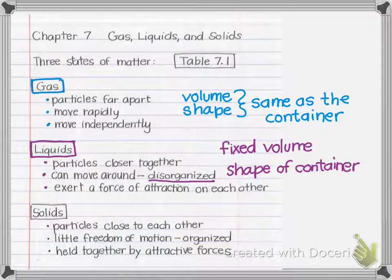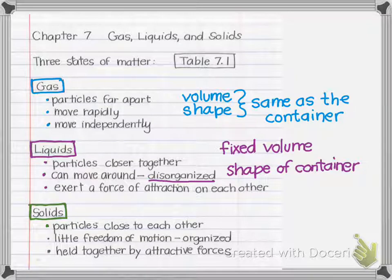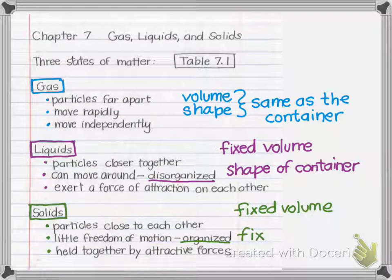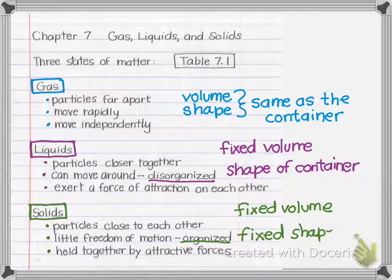Now think about a solid — if we're thinking about water, you're thinking about ice. When you have a solid, the particles are close to each other, and because they're so close the attractive forces are strong and there is little freedom of motion. The particles are very organized and held closely together. As a result, solids have both a fixed volume — the amount of space they take up will not change — and a fixed shape. They will not take on the shape of whatever container you put them in.